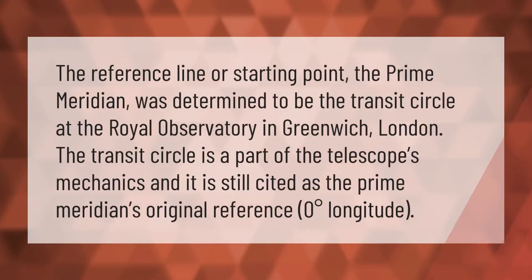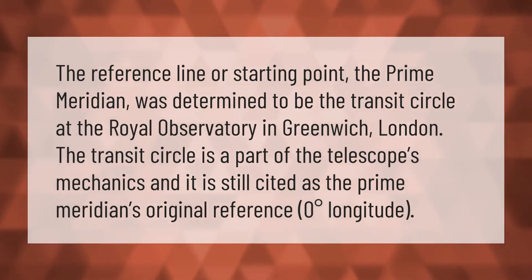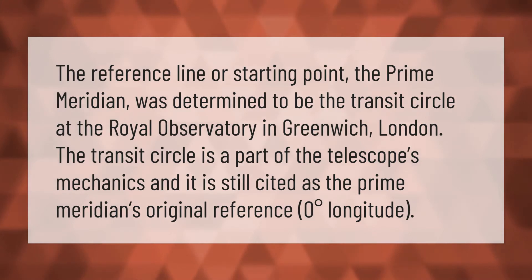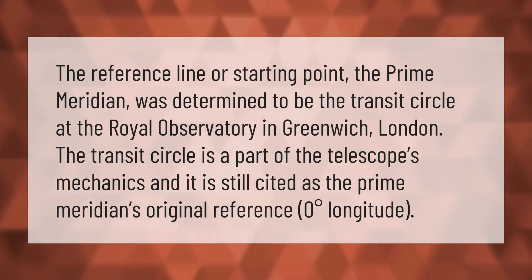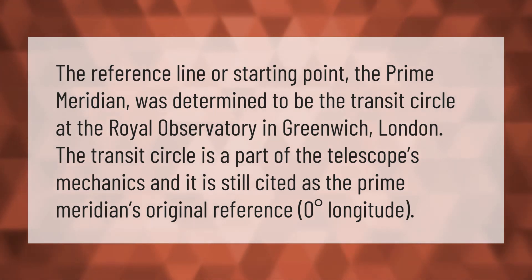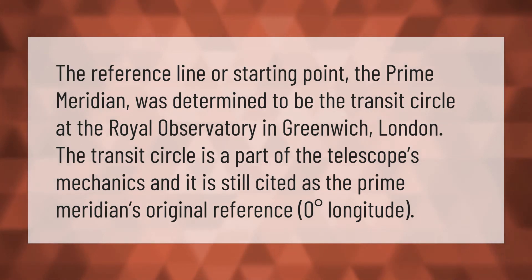The reference line or starting point, the prime meridian, was determined to be the transit circle at the Royal Observatory in Greenwich, London. The transit circle is a part of the telescope's mechanics and is still cited as the prime meridian's original reference: zero degrees longitude.